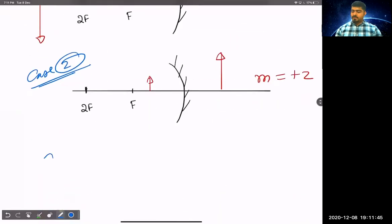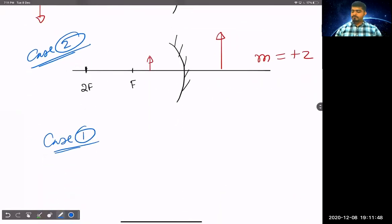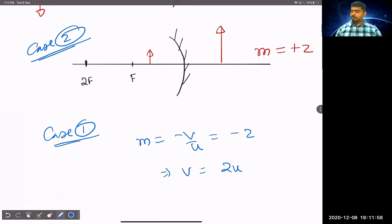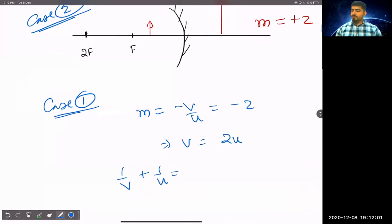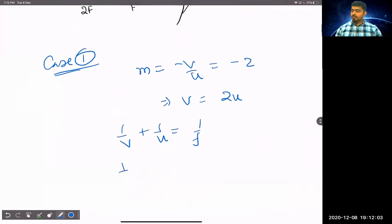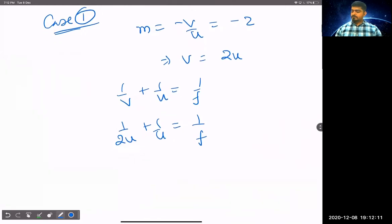So, first case we will solve. Magnification is minus v by u and that is minus 2. So, v is 2u. Then, 1 by v plus 1 by u equal to 1 by f. So, 1 by 2u plus 1 by u equal to 1 by f. So, 3 by 2u equal to 1 by f or u equal to 3f by 2.